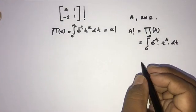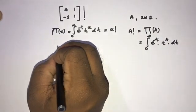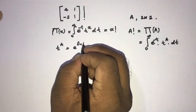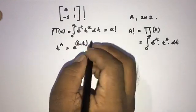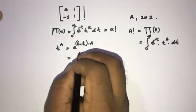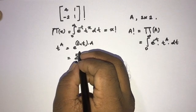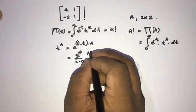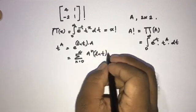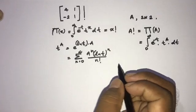Here we have t^A, so we can write t^A equals e^(ln(t) · A). Now we can use the series expansion: the infinite sum from n=0 to infinity of A^n times (ln t)^n over n factorial.